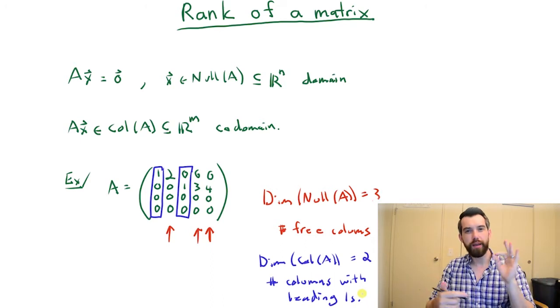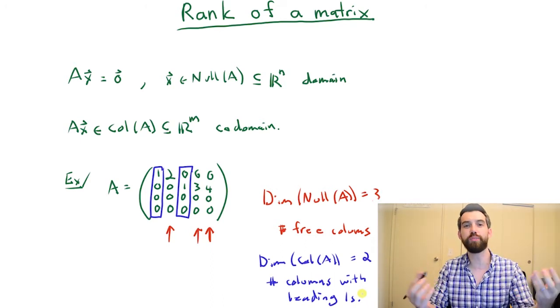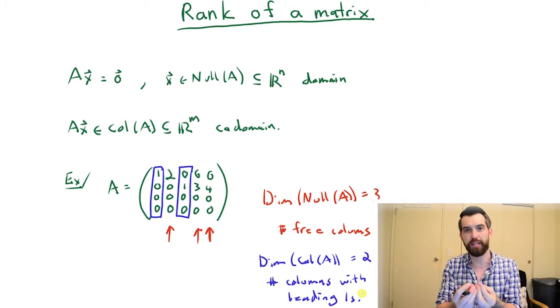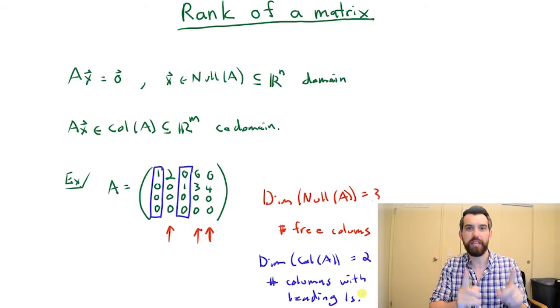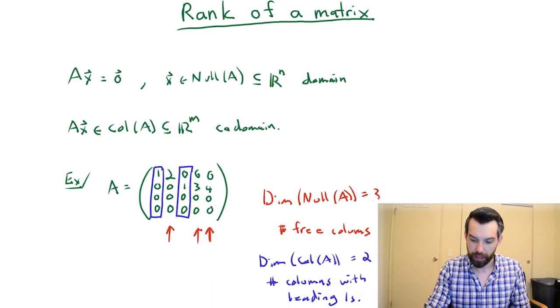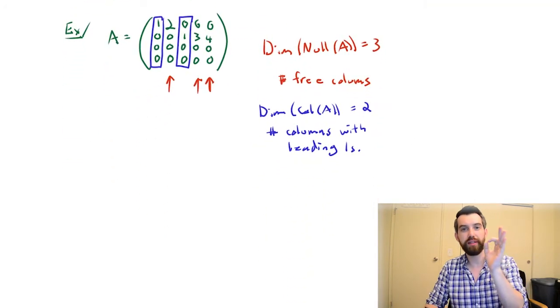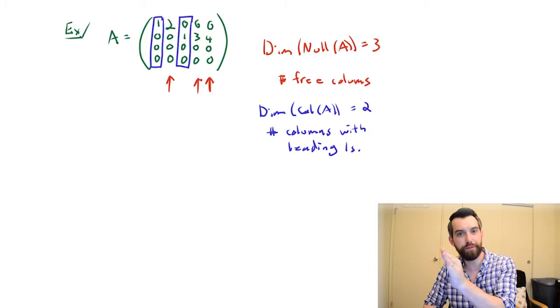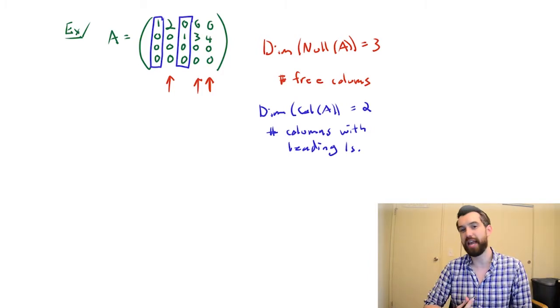Now I want to focus on the interesting principle that connects these two different ideas. Notice that if I add together the number of columns with leading ones and the number of free columns, I've got all of the columns. In this particular scenario, the number of leading one columns and the number of free columns are going to be five, and generically n if it's an n by n matrix.